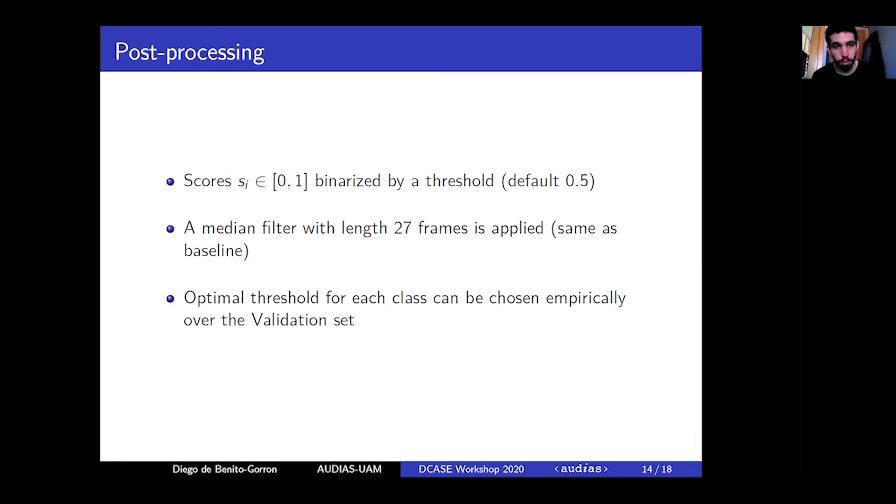Afterwards, the scores are binarized using a threshold with a default value of 0.5. Then a median filter is applied to avoid impulsive changes in the temporal predictions. Additionally, we have run experiments choosing the optimal threshold for each class over the validation set.